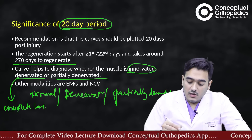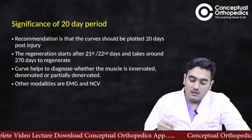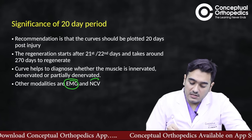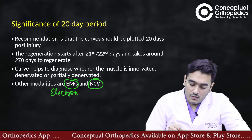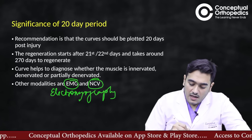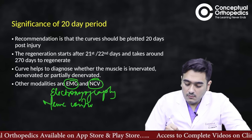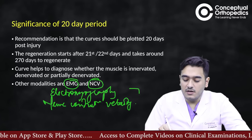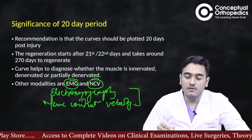Other modalities apart from the strength duration curve include EMG (electromyography) and NCV (nerve conduction velocity). These are alternatives to the strength duration curve and will be discussed separately.